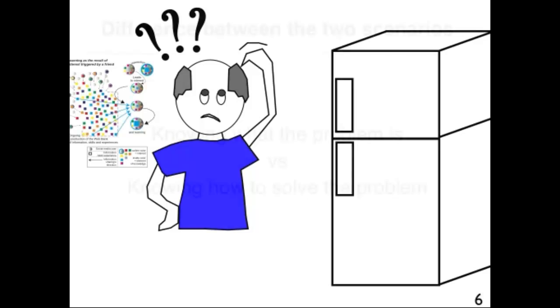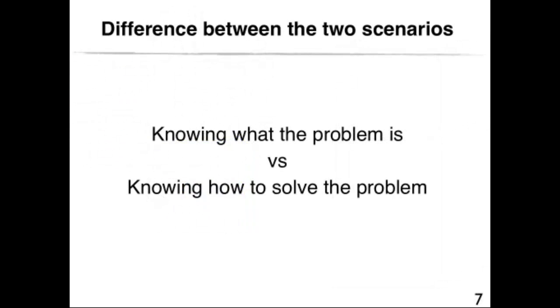What do you think most people would think in face of this scenario? What is the difference between the two scenarios we just presented? Both scenarios refer to the refrigerator repair person. One knows what the problem is and the other needs to get connected to a network to troubleshoot the problem. What the scenario suggests is that the refrigerator repair person who needs to be connected to his network to solve the problem would look somewhat incompetent.